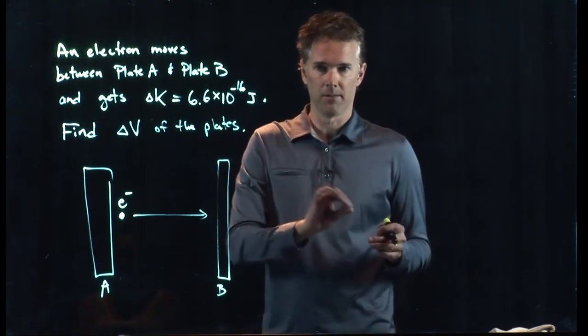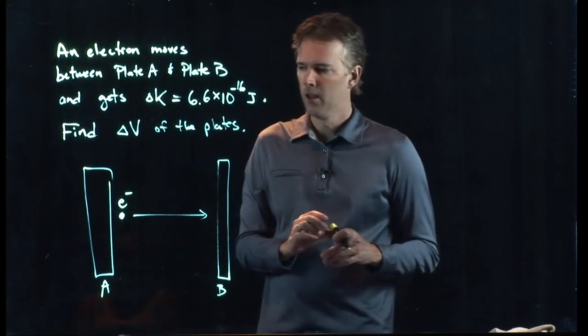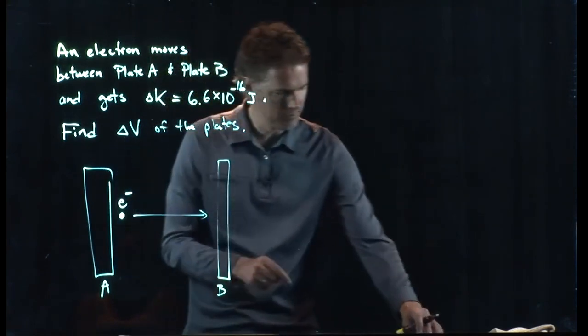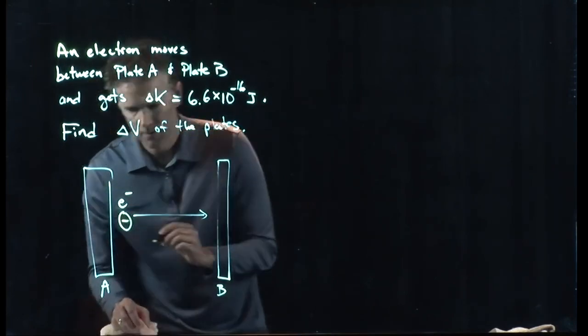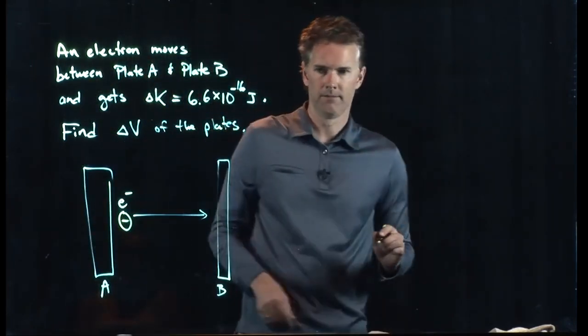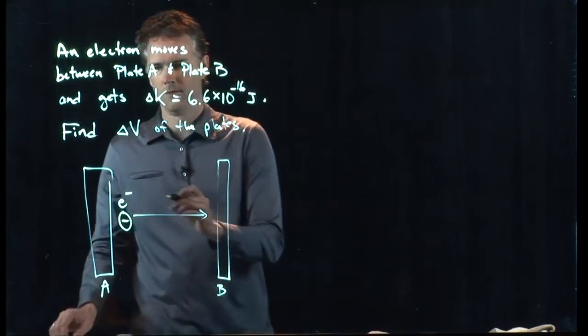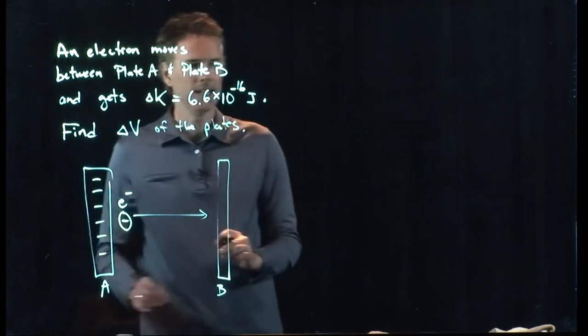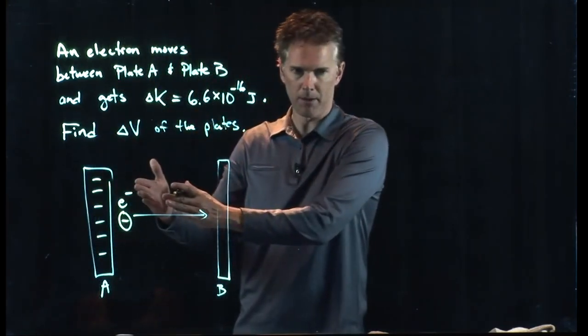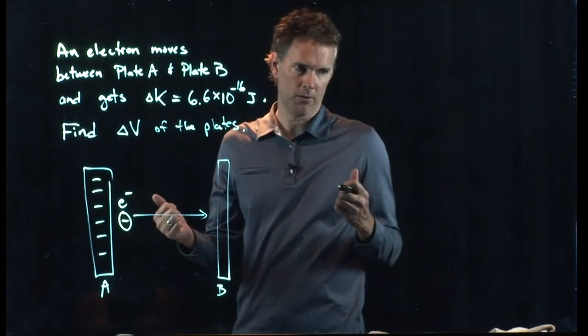Negative 1.6 times 10 to the minus 19 coulombs. So, if this electron is a little negative charge, what must be on plate A? Negative charge. Exactly right. Likes repel. There must be a whole bunch of negative charge on that plate to push that electron away.